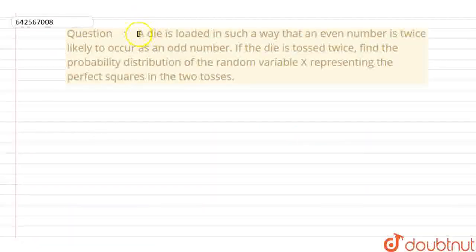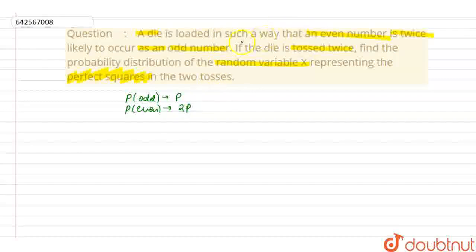Good morning everyone. In this question it is given, a die is loaded in such a way that an even number is twice likely to occur as an odd number. Secondly it is given, if the die is tossed twice, find the probability distribution of random variable X representing the perfect squares in the two tosses. Let us see. First of all, let the probability of any odd number occurring be p and the probability of even number then becomes 2p as given in the question. It is twice likely to occur.